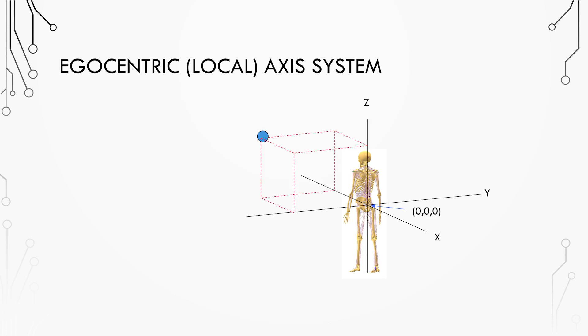The standard biomechanical axis is thus defined by the right-hand rule as positive x being forward, positive y being left, and positive z being up.